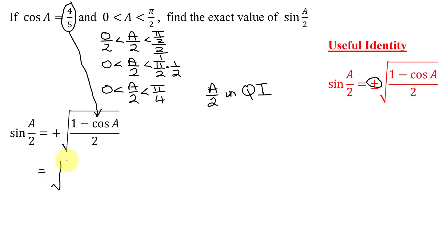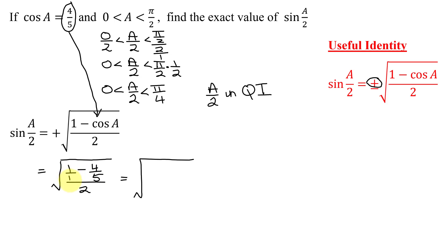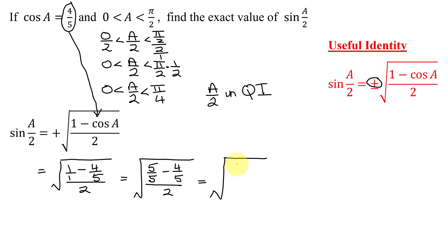So I just have the sine of A over 2 equals the square root of 1 minus 4 fifths, all divided by 2. Now it's just fractional arithmetic. I need a common denominator — I turn 1 into 1 over 1, and my common denominator is 5. Multiplying 1 over 1 by 5 over 5 gives 5 fifths. So I have 5 fifths minus 4 fifths, all divided by 2. With a common denominator, 5 fifths minus 4 fifths equals 1 fifth.